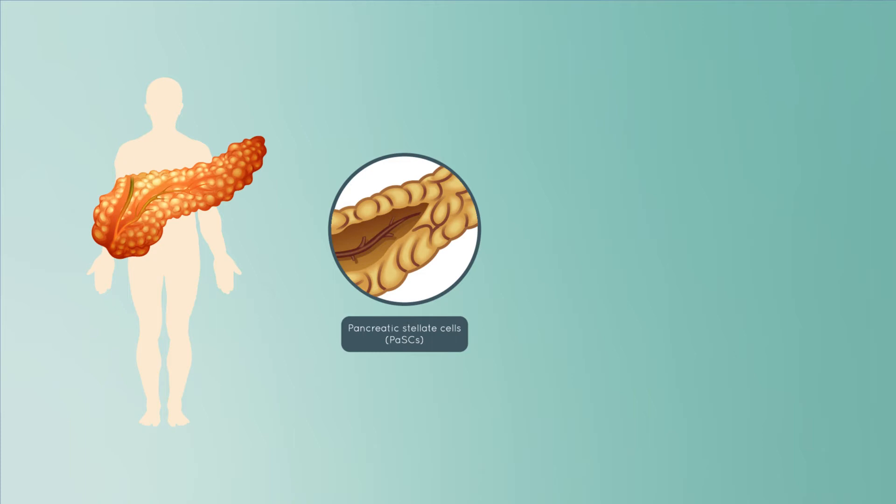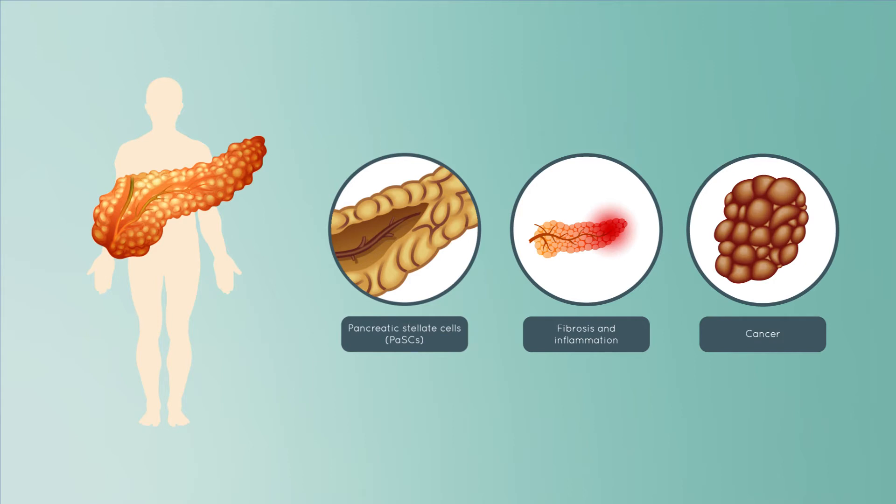These cells mediate the development of fibrosis and inflammation that occurs in pancreatic cancer and interact with early pancreatic cancer cells to facilitate the progression and metastasis of the cancer.